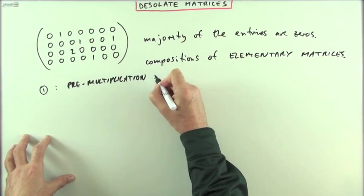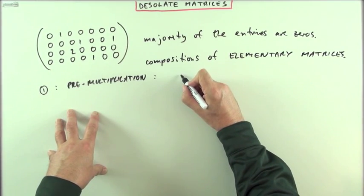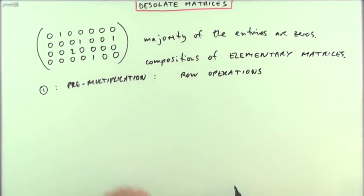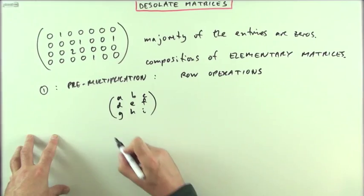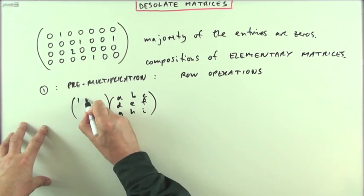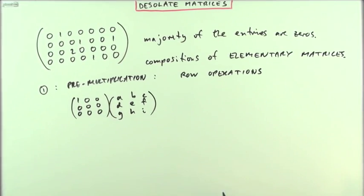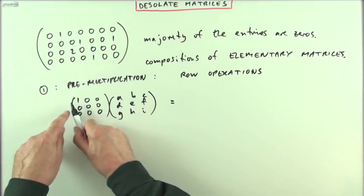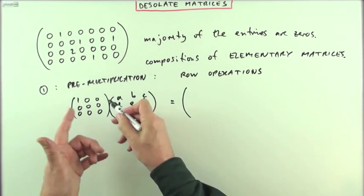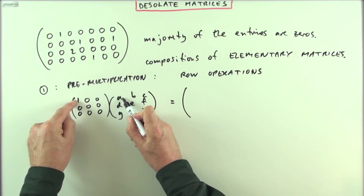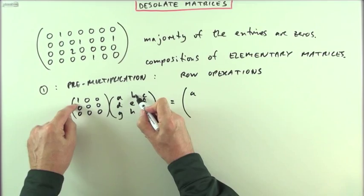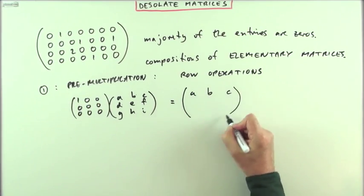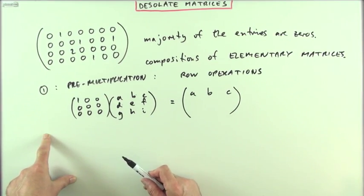With pre-multiplication, you'll be considering elementary row operations. Sticking with three-by-three matrices, I'll pre-multiply a general three-by-three matrix by a desolate matrix that's jam-packed full of zeros. What would the result be? Going through the multiplication - row times column - it's going to be one lot of a, none of the others; one lot of b, none; one lot of c, none. All that's happened is it's replicated the first row. It's a row operation.